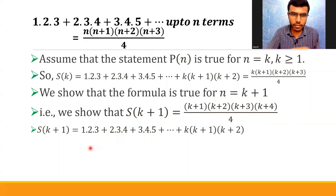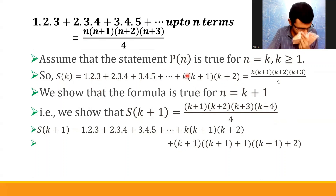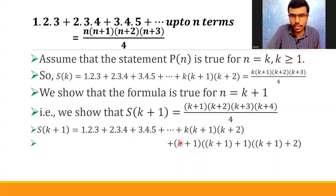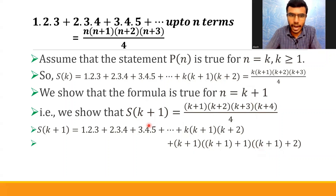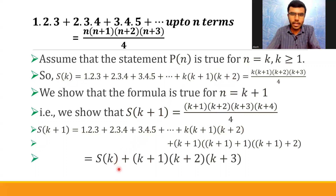By definition, S(k+1) = 1×2×3 + 2×3×4 + ... + k(k+1)(k+2) + (k+1)(k+2)(k+3). S(k) has k terms, and S(k+1) has k+1 terms. The (k+1)th term is obtained by replacing k with k+1, giving (k+1)(k+2)(k+3). So ultimately I get S(k) + (k+1)(k+2)(k+3).